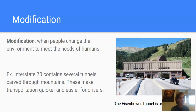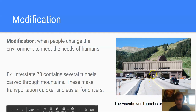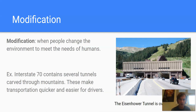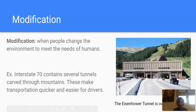A modification is when people actually change the environment to meet the needs of human beings. In this case, we are actually completely altering our landscape. Here's an example of the Eisenhower Tunnel — this is a tunnel that's over a mile and a half long on Interstate 70 in Colorado. If you drive on it, it actually goes through the mountains. This tunnel makes transportation quicker and easier for drivers by modifying the environment and cutting a tunnel through it.